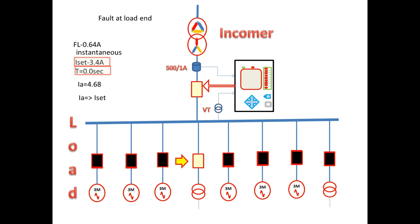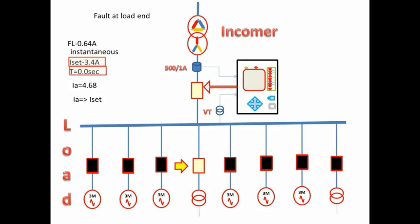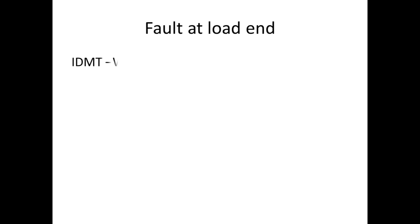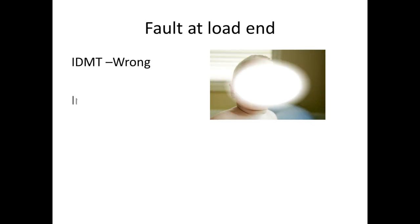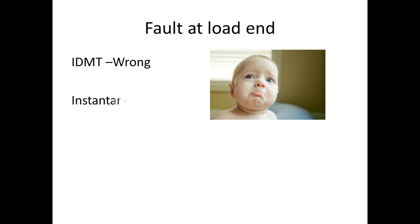So the relay will start to pick up and trip instantaneously. Most probably the feeder will also trip instantaneously because it is a heavy fault, or it may trip without giving a chance to the feeder, meaning both will get tripped simultaneously. So this instantaneous setting is also not preferable.